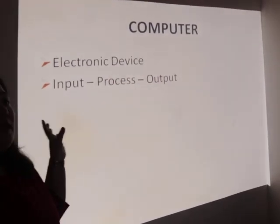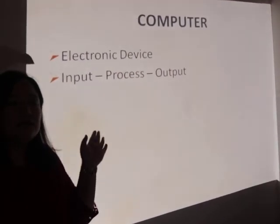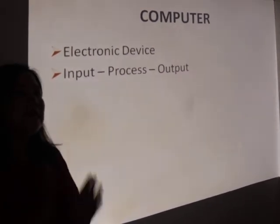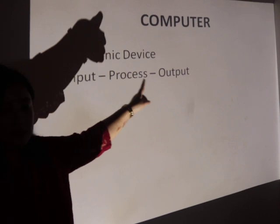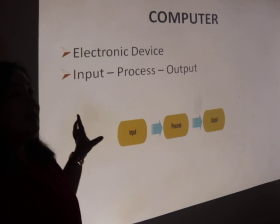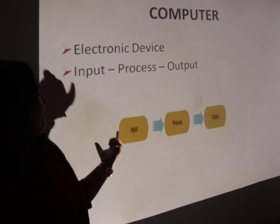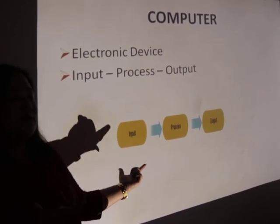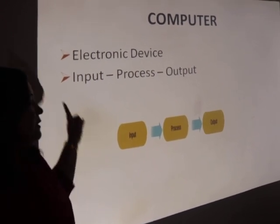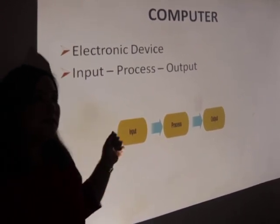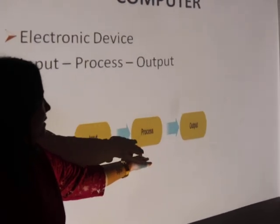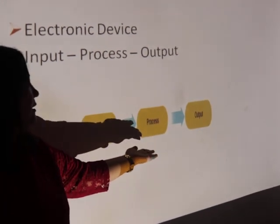Computer is an electronic device or electronic machine, and most machines work in three parts — that is input, process, and output, as shown in the figure. To understand this, let's take a simple real-life example: a washing machine. A washing machine is also a machine. First, it takes the input from the user — that is dirty clothes — and then it processes it by washing those dirty clothes.